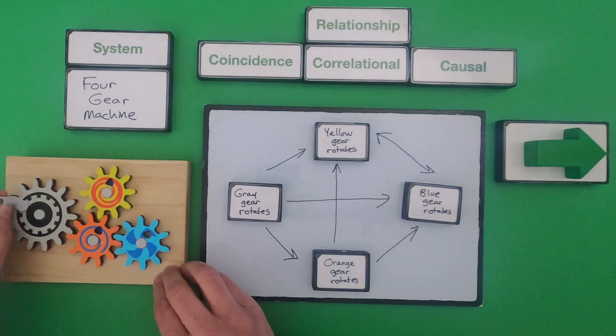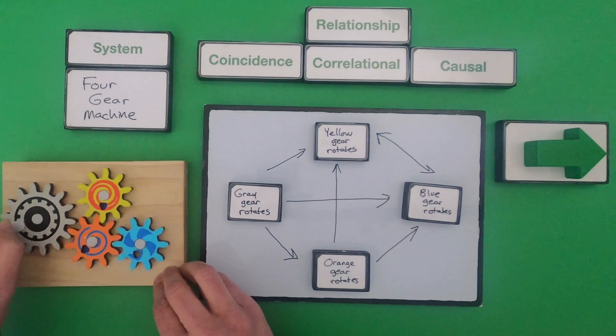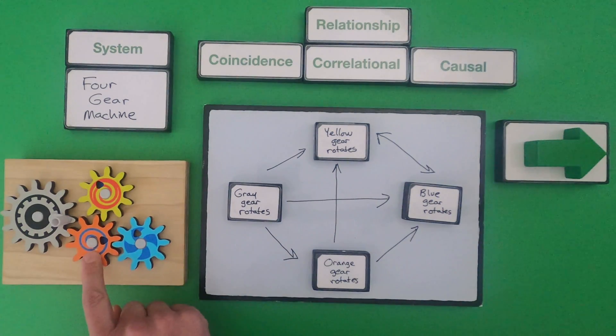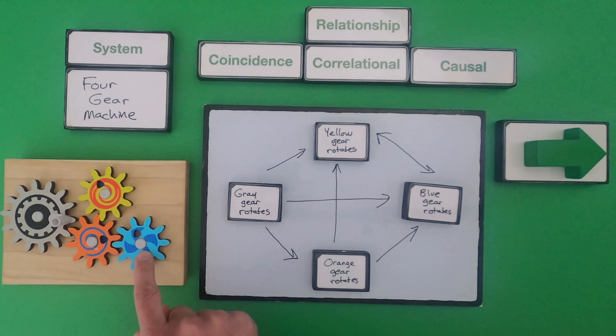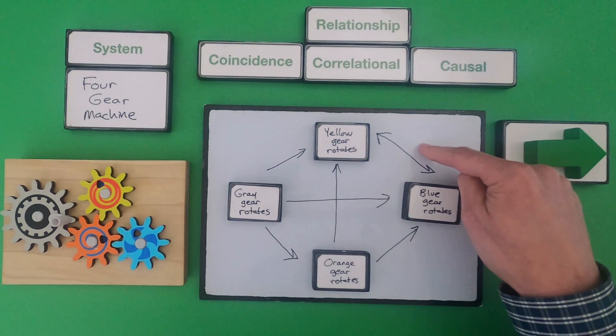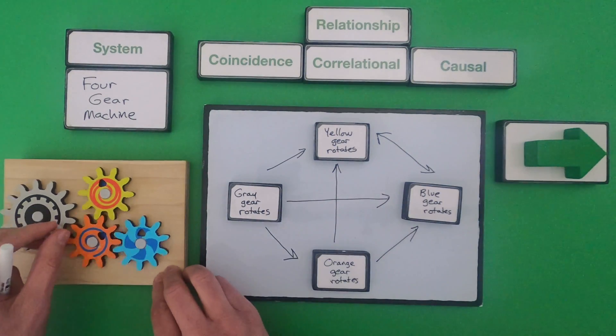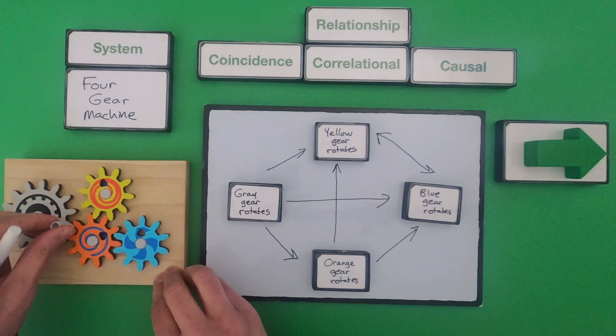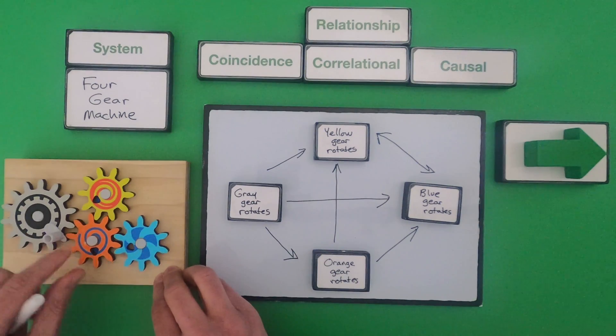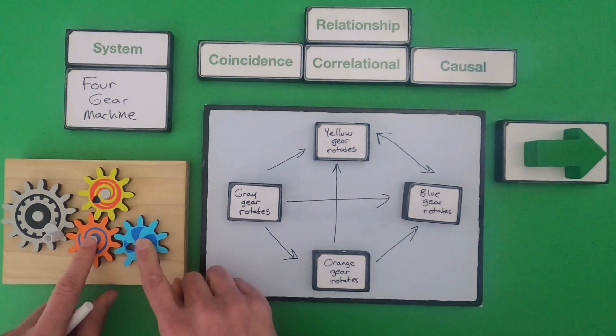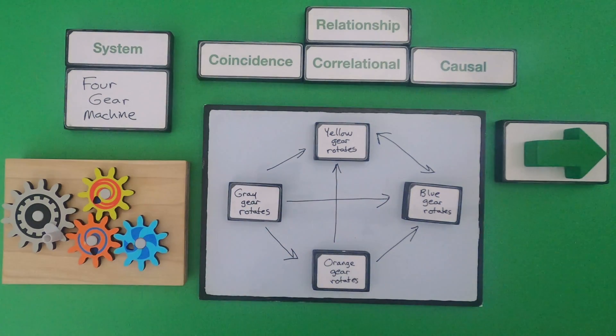But what's interesting about this setup is since the orange gear is touching both the yellow and the blue gear but these aren't touching each other I call this a correlation. Because we could say that both the movement of the yellow and the movement of the blue are caused by the orange but blue is not causing yellow and yellow is not causing blue.